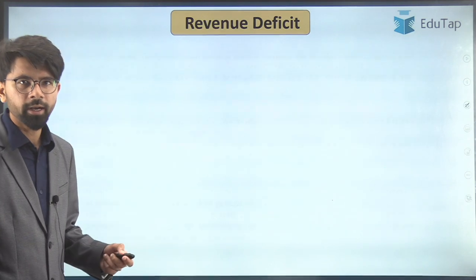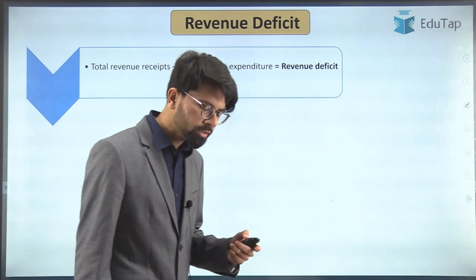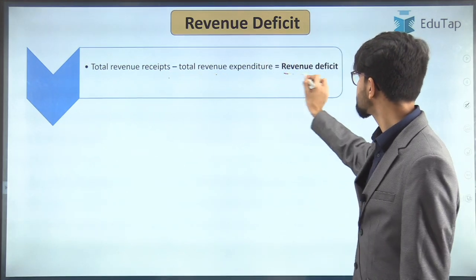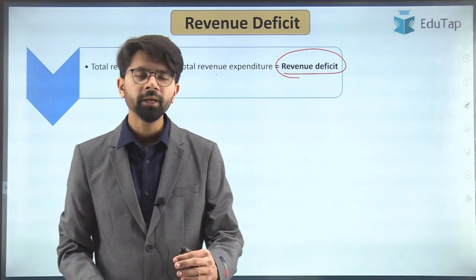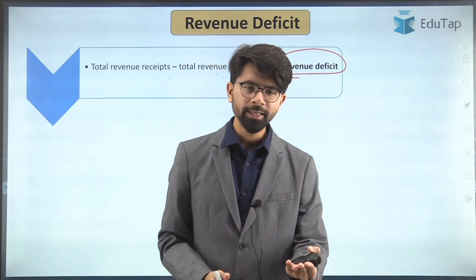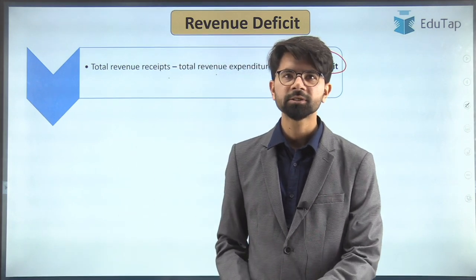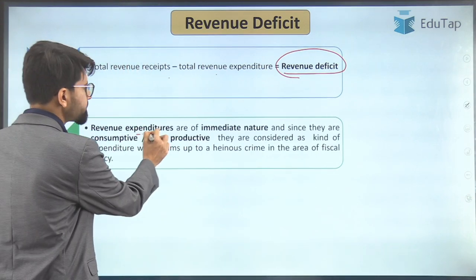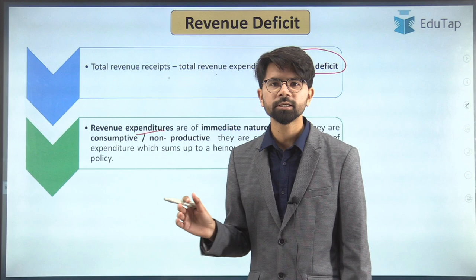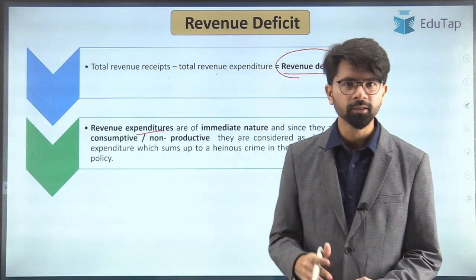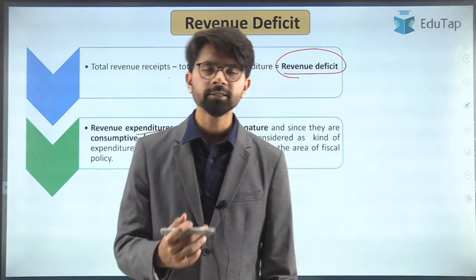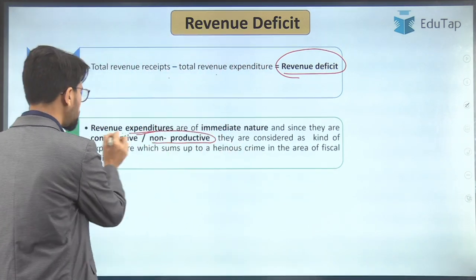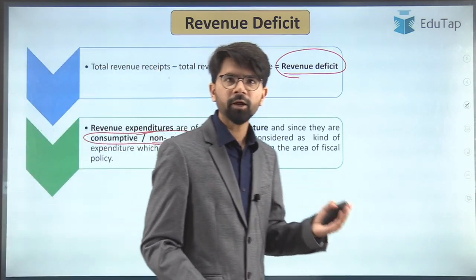Having understood fiscal deficit and primary deficit, let us move on to revenue deficit. In the revenue budget, there are two components: revenue receipts and revenue expenditure. The difference between revenue receipts and revenue expenditure is revenue deficit. If a family is borrowing only to meet its daily needs like food and other expenses, that is a terrible situation. Similarly, if the government is running into revenue deficit, it will have many troubles. Revenue expenditure covers subsidies, salaries and other immediate components.